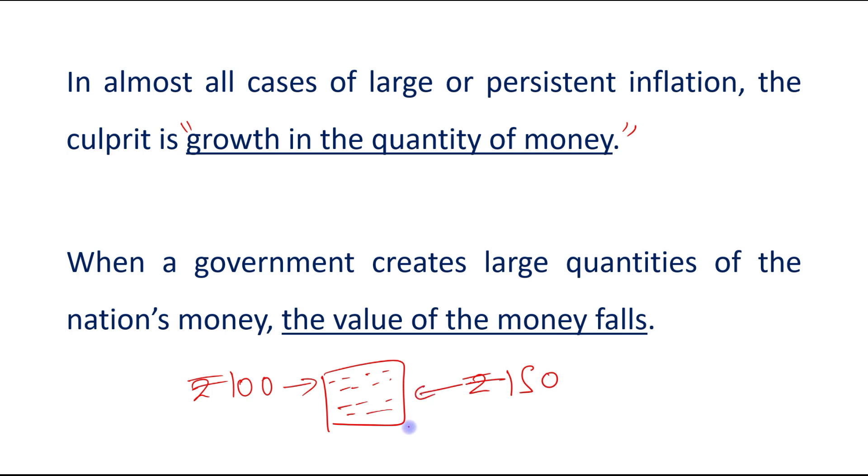Let's suppose rupees 150. So as you can see, the prices have increased and this will be referred to as inflation. Earlier you had to pay rupees 100 to purchase this commodity, but now because the value of money has been reduced, you have to pay a larger amount, let's suppose rupees 150, to purchase the same commodity. And as you can see, the prices have increased from rupees 100 to rupees 150, and this will be referred to as inflation.